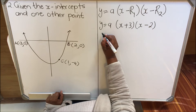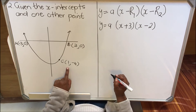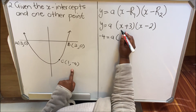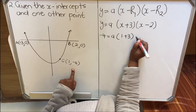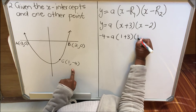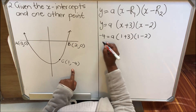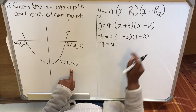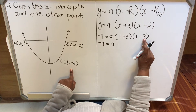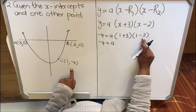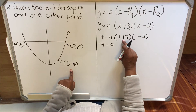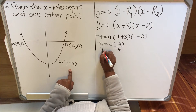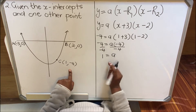Then you substitute the other point. My y is -4 and my x is 1. So: -4 = a(1 + 3)(1 - 2), which gives -4 = a times 4 times (-1), so -4 = -4a. Divide both sides by -4: a = 1.